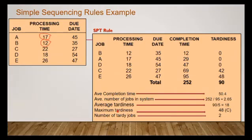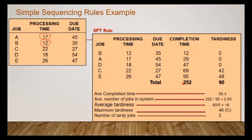The maximum tardiness — looking at the table with values 0, 2, and 48 — it's obvious that 48 is the maximum tardiness. The job with the maximum tardiness is job C. The number of tardy jobs, if you count them, is 2.